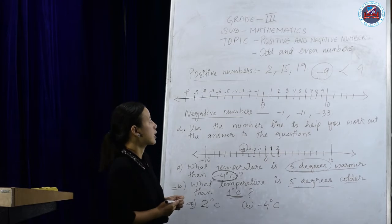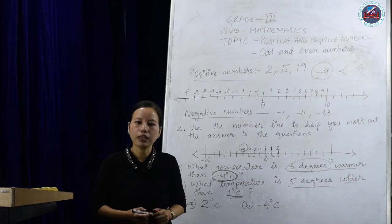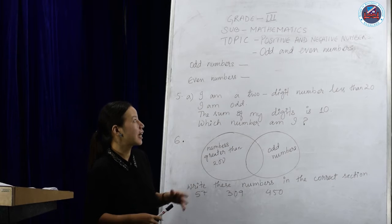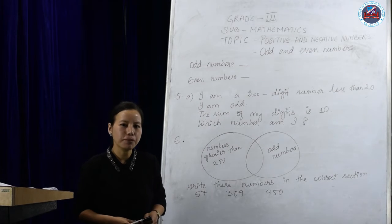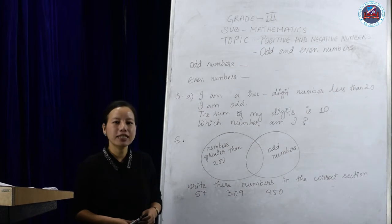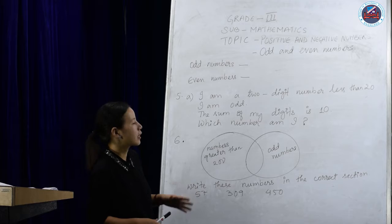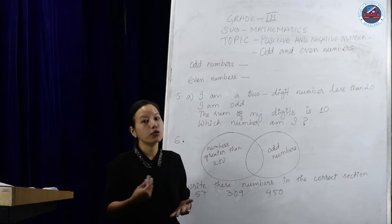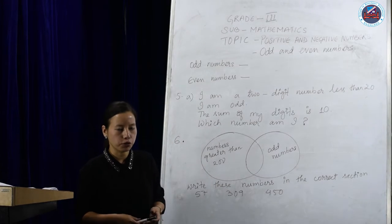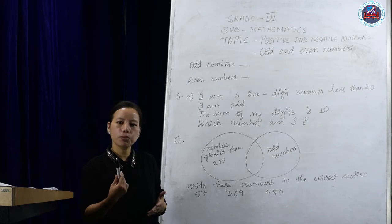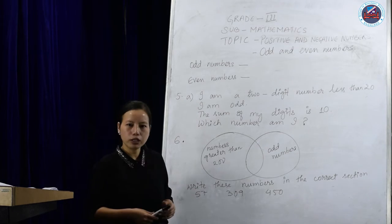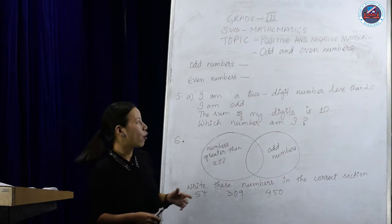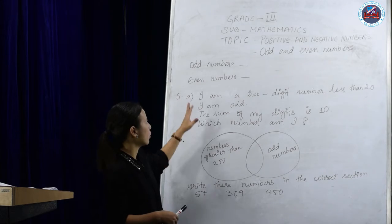Now we will go to the next topic, that is odd and even numbers. Odd numbers are numbers which are not a multiple of 2, or we can say that an odd number is not divisible by 2. And an even number means divisible by 2, or multiples of 2 are called even numbers.